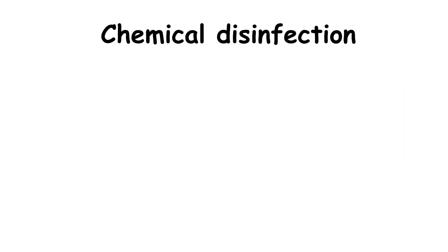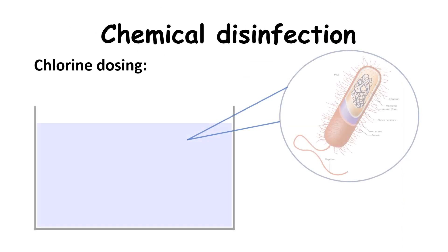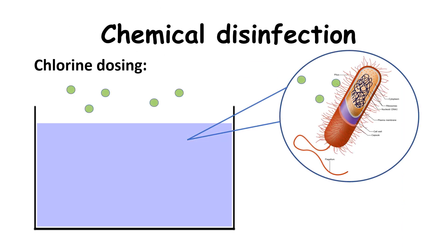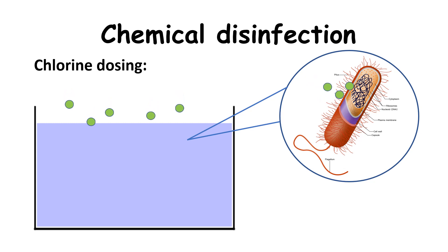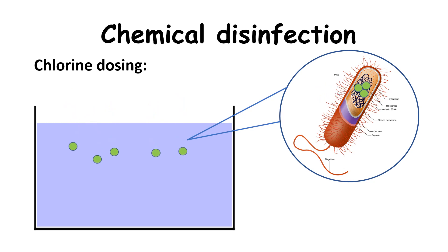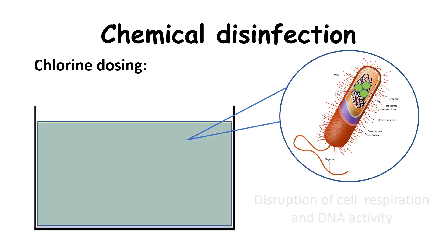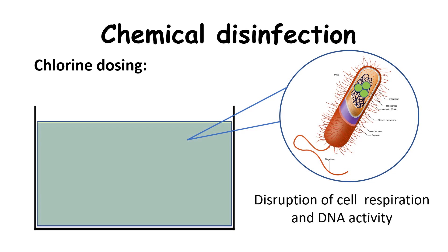Chemical disinfection approaches like chlorine dosing damage the cell membrane of microorganisms and then enter the cell to disrupt respiration and DNA activity. Chlorine also kills most viruses, but it requires retention times of up to 30 minutes or more.